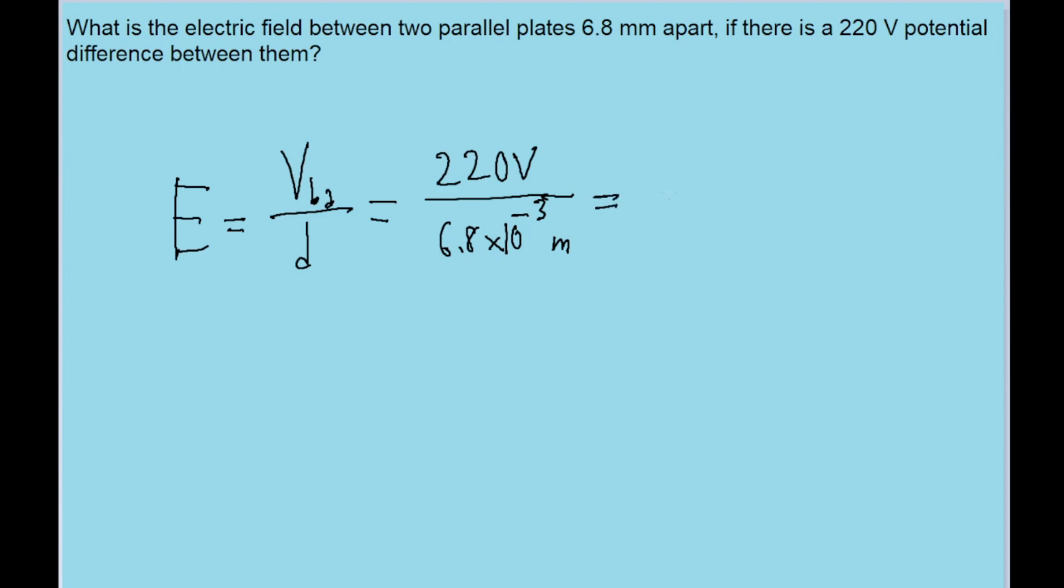And if we put this into our calculator, then we find an electric field of 3.2 times 10 to the power of 4 volts per meter. And that is the electric field between the two plates.